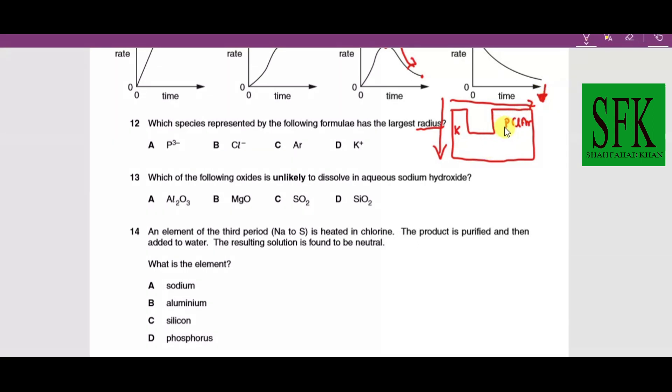Here we've got phosphorus which is negatively charged—the phosphide ion P³⁻. This phosphide ion will have the greatest radius because it's negatively charged. It has more electrons than the protons in the nucleus, so the effective nuclear attraction experienced by each electron has changed.